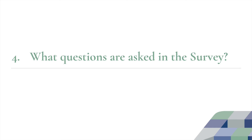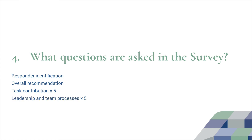What questions are asked in the survey? As you might expect, you're asked to identify who you are. Then you'll be asked to make an overall recommendation about the student that you're rating. There are five measures of contribution to task and another five measures of contribution to leadership and the team's processes of working together. Then there is qualitative feedback about advice to the student for improving their future contribution or commenting on their strengths. Finally, you have the opportunity to give advice to the teacher about the overall experience with the class and the peer assessment process.